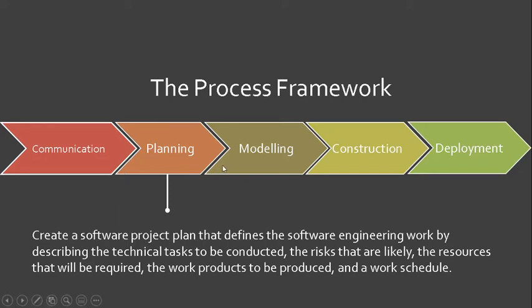Normally, when we say planning activity, it should follow after communication. The planning activity is where the team creates a software project plan that defines the software engineering work by describing the technical tasks to be conducted, the risks that are likely, the resources that will be required, the work products — basically the software or system to be produced — and also the working schedule. This includes release planning and iteration planning for extreme programming, and sprint planning in Scrum — these activities fall under the planning activity.